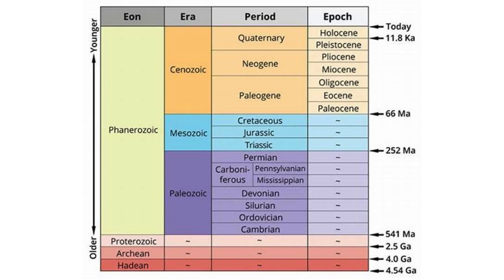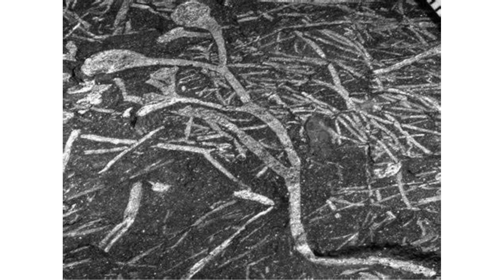Earth's history is divided into different Eons, which encompass billions of years and provide a broad framework for understanding the overall history of Earth. Eras are subdivisions of eons representing major intervals of geological time classified by significant changes in Earth's geobiological history. Periods are smaller intervals of geological time marked by distinct geobiological events. Epochs are further divisions of periods. Ages and stages are smaller subdivisions of geologic time representing the shortest intervals within epochs, defined based on criteria such as the appearance or disappearance of certain fossil species, changes in rock formation, or other geological events.